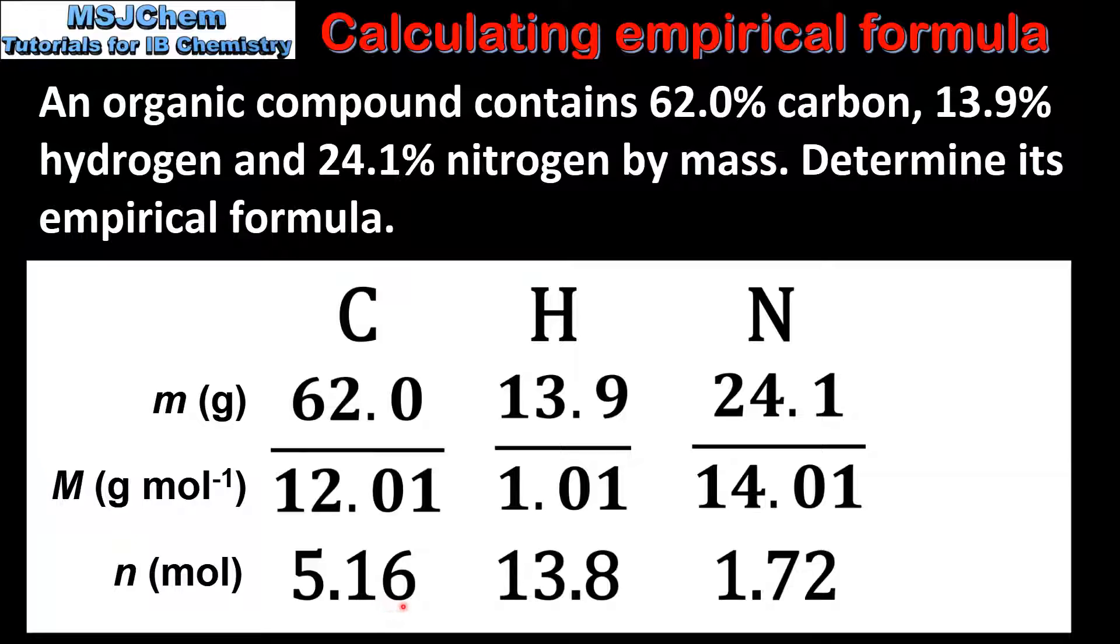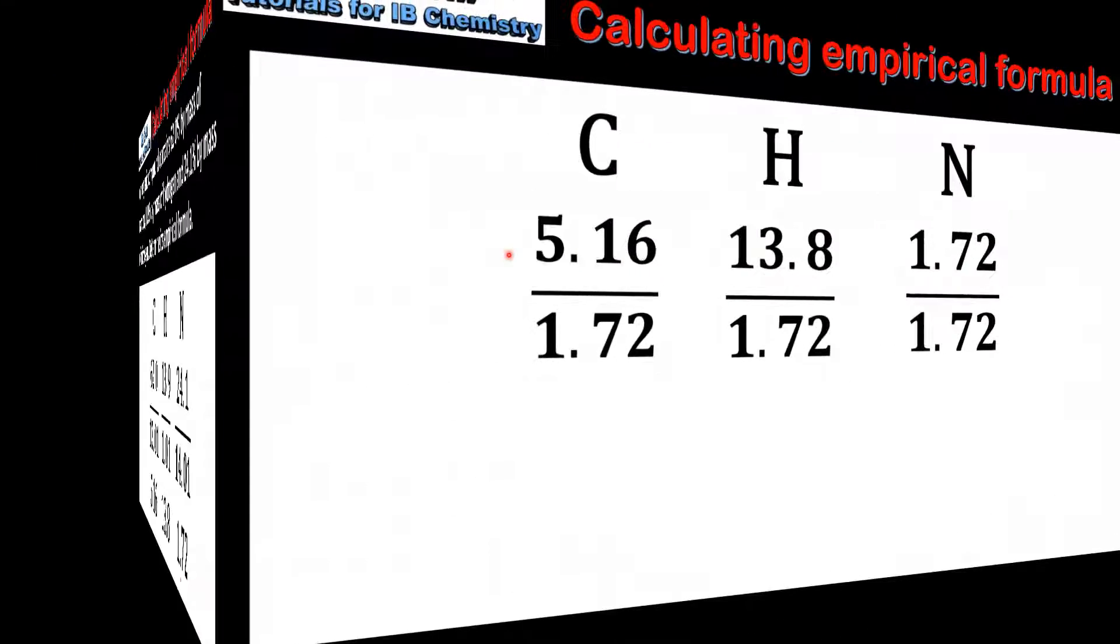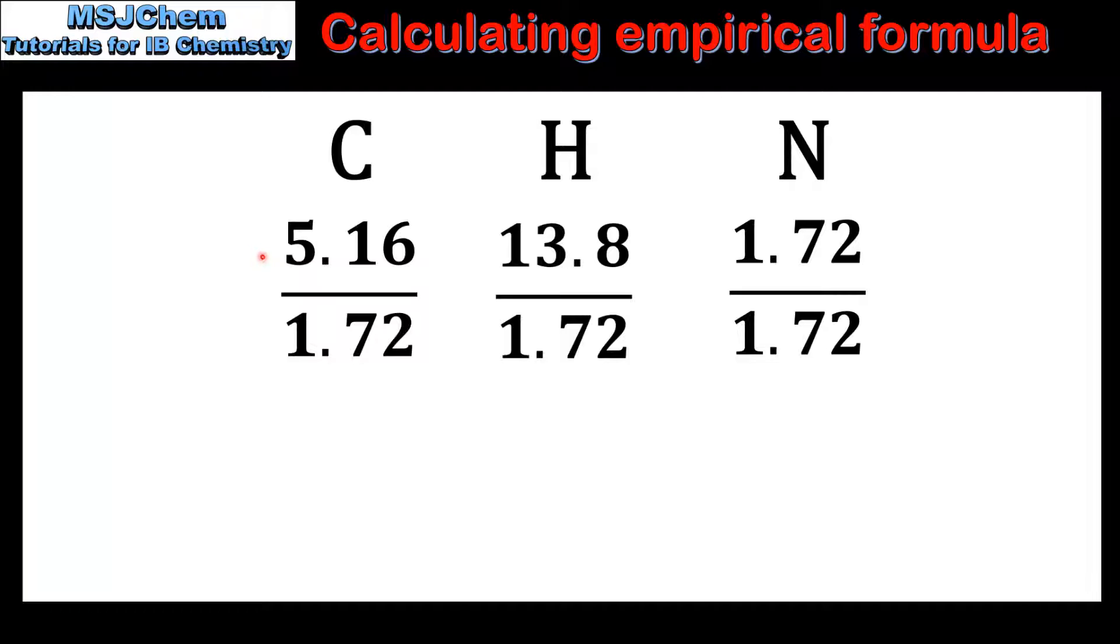This gives us 5.16 moles of carbon, 13.8 moles of hydrogen, and 1.72 moles of nitrogen. The next step is to divide each amount in moles by the smallest value. So for carbon we divide 5.16 by 1.72. For hydrogen it's 13.8 divided by 1.72. And for nitrogen it's 1.72 divided by 1.72. This gives us 3 for carbon, 8 for hydrogen, and 1 for nitrogen. And finally we write the empirical formula, which is C3H8N.